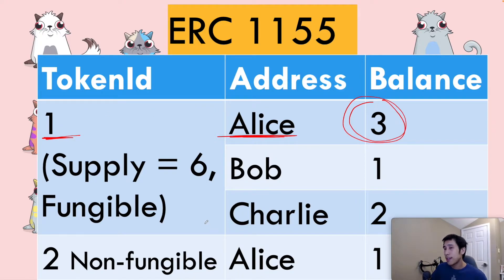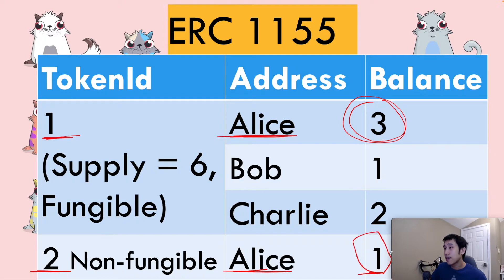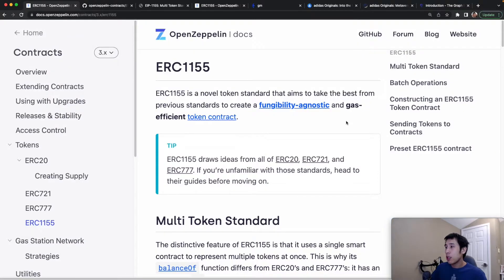The same process applies even if the token is a non-fungible token. The first key is the token ID — which is token ID 2 — the second key is Alice's address, and you can see that the balance of Alice is 1. This means that Alice owns 1 token of token ID 2.